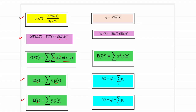For the denominator we have sigma x times sigma y. Sigma x is the standard deviation of x, obtained as the square root of variance of x. Variance of x is given by E of x square minus E of x the whole square. E of x square is obtained as summation of x square into probability of x. Since only one random variable is involved, use only one summation with the marginal probability function of x.